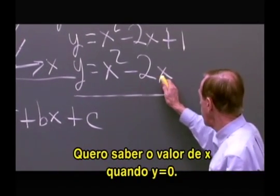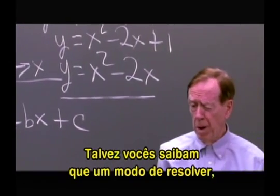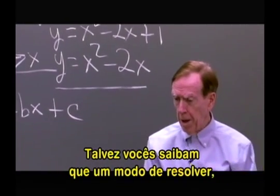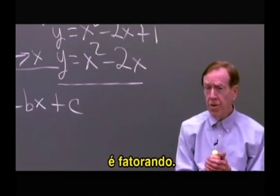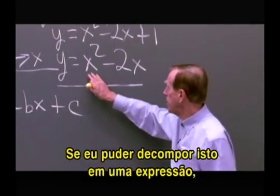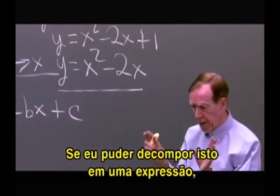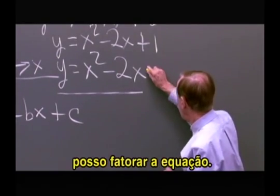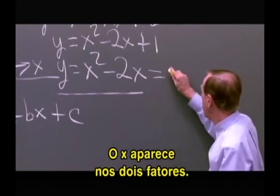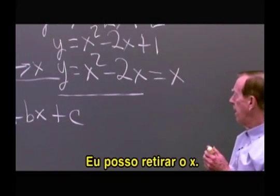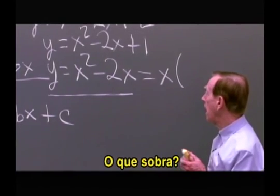So I want to find where that's zero. Maybe you know that one way to do it, if you have a nice example like that one, is factoring — if I can split this into multiplying two things together. And I can. Do you know how I could factor that? An x appears in both places, so I can take out the x.